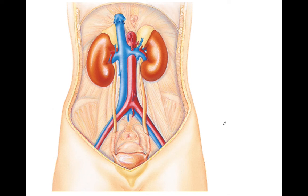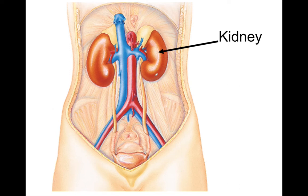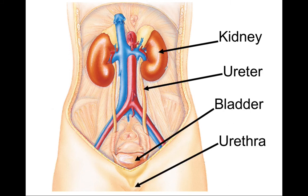The urinary system has four components. First and foremost we have the kidneys, which are the major players of the urinary system — the organs that function as the filter and control what substances remain in and leave the blood. Another major function of the kidneys is to produce urine. The rest of the components have their functions around excreting that urine. The four components of the urinary system are the kidneys, the ureters, the urinary bladder, and the urethra.